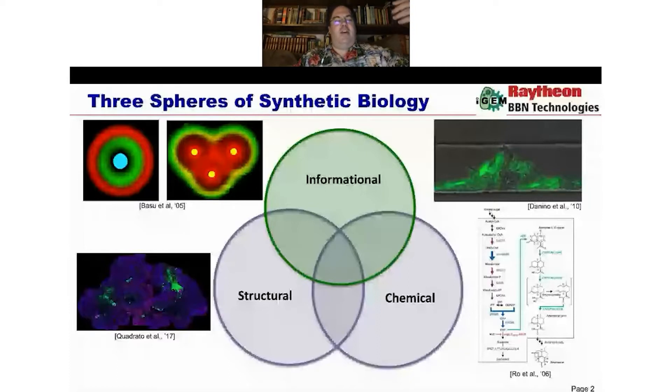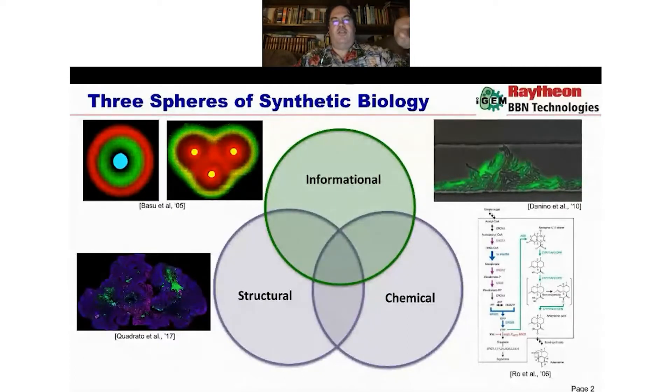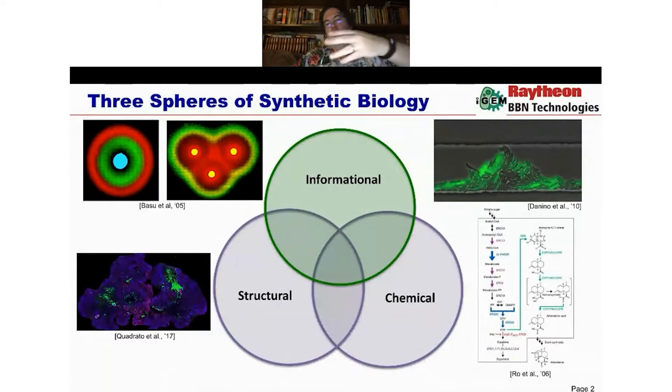This is where a lot of the classic papers that kicked off the idea of synthetic biology come from, like the band detector by Basu and Weiss up on the upper left. That's a bacterial colony in the center of those dots that is sending a signal that's causing other bacteria at different ranges to respond with different colors. Or on the right, that's a snapshot out of an oscillator system, another of the classic results of synthetic biology.